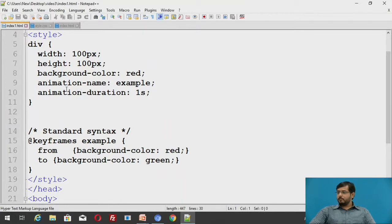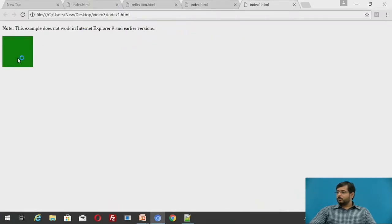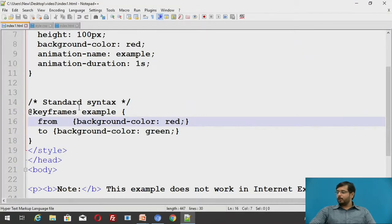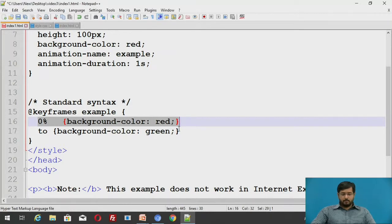Similarly we will see a simple example. Now, you can also give from and to to a particular animation. I will run this file for you. You will understand. This color changed from red to green and it came back to red because it was its default value.